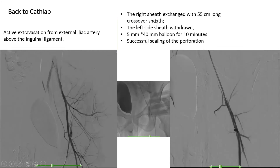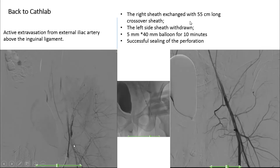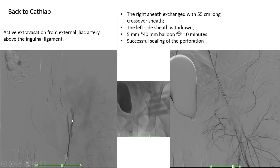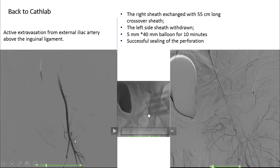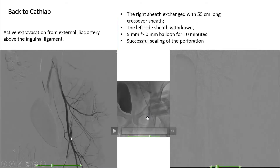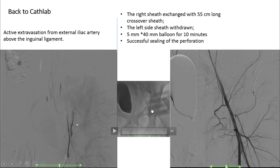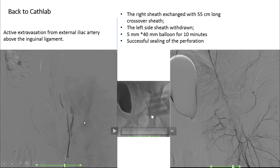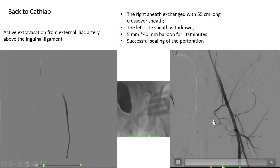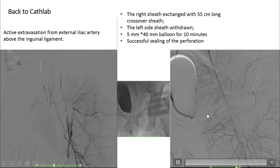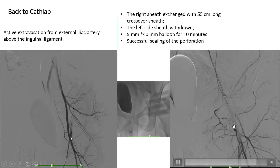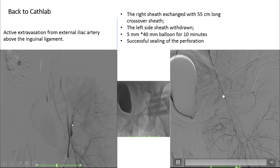The right sheath was exchanged with a 45-centimeter long crossover sheath, the left side sheath was withdrawn, and a 5-millimeter balloon was inflated for 10 minutes. You can see how successful this was after 10 minutes in controlling the bleeding. There was no bleeding after 10 minutes of balloon inflation.